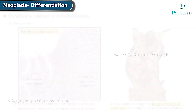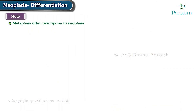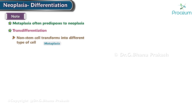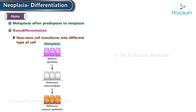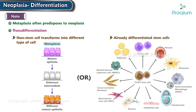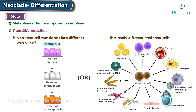A small number of cases of Barrett's esophagus can develop into esophageal adenocarcinoma if left untreated. An important point to note is that metaplasia often predisposes to neoplasia. Transdifferentiation is a type of metaplasia in which a non-stem cell transforms into a different type of cell or an already differentiated stem cell.